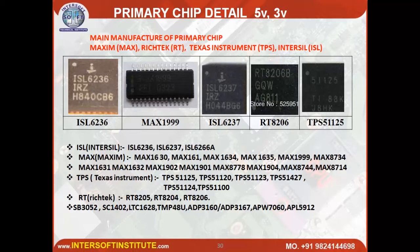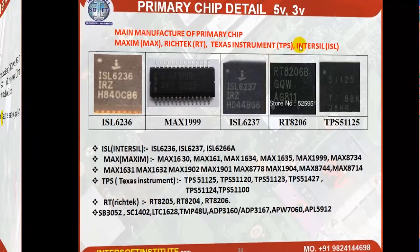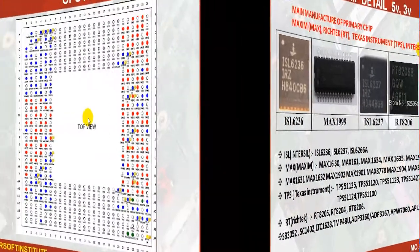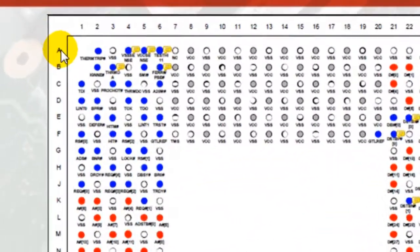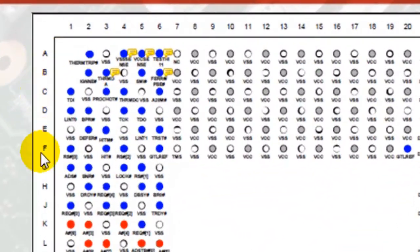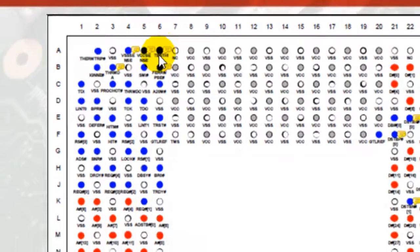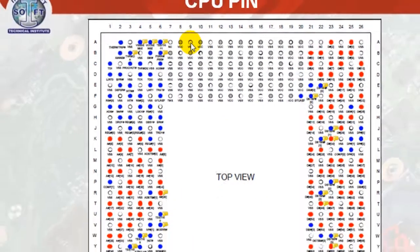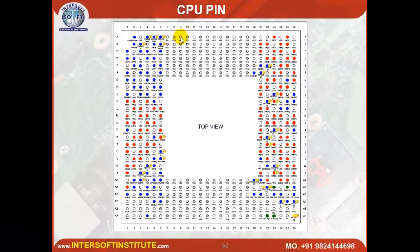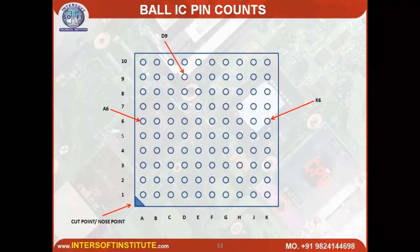The main IC manufacturers are Maxim, Richtek, Texas Instruments, and ISL. To count IC pins, we use dot notation: A, B, C, D and 1, 2, 3, 4. If we want to count dots, like A9, we can identify pin addresses. Small ICs also use this address format such as D9.